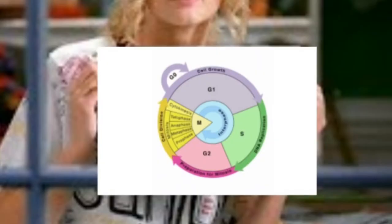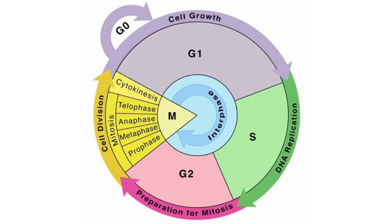The cell cycle is a process that cells go through to replicate. It has four stages: interphase, which includes G1, S, and G2, and the mitotic phase, which includes prophase, metaphase, anaphase, and telophase.